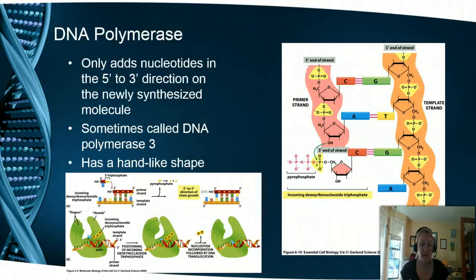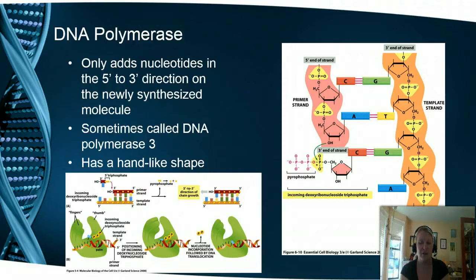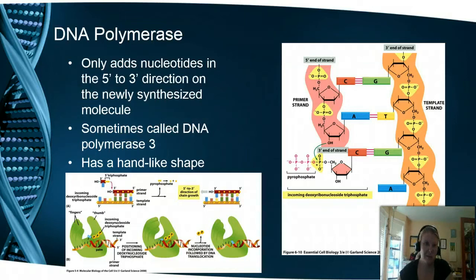The first enzyme that actually carries out replication is DNA polymerase, which is responsible for adding new bases to the DNA backbone. It can only add nucleotides in the 5' to 3' direction of the newly synthesized molecule. This directionality is really important because it creates the lagging strand. As you can see from the image at the bottom, DNA polymerase looks like a hand, and it uses that shape along with the nucleotides to bring in the new one and have it fit. Through this process we lose two phosphate groups from the triphosphate, with energy being utilized to help build the strand.